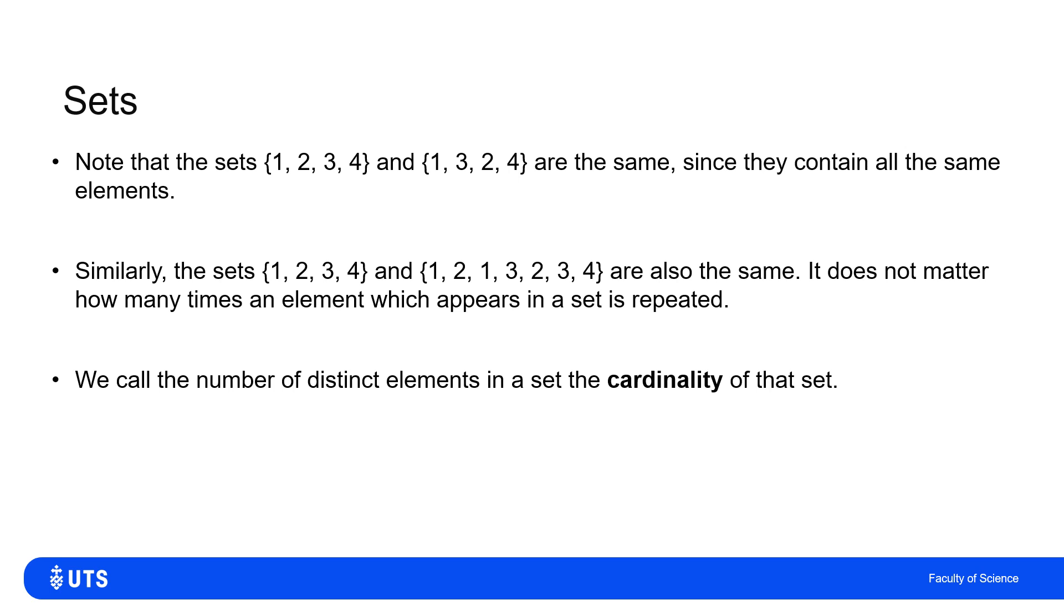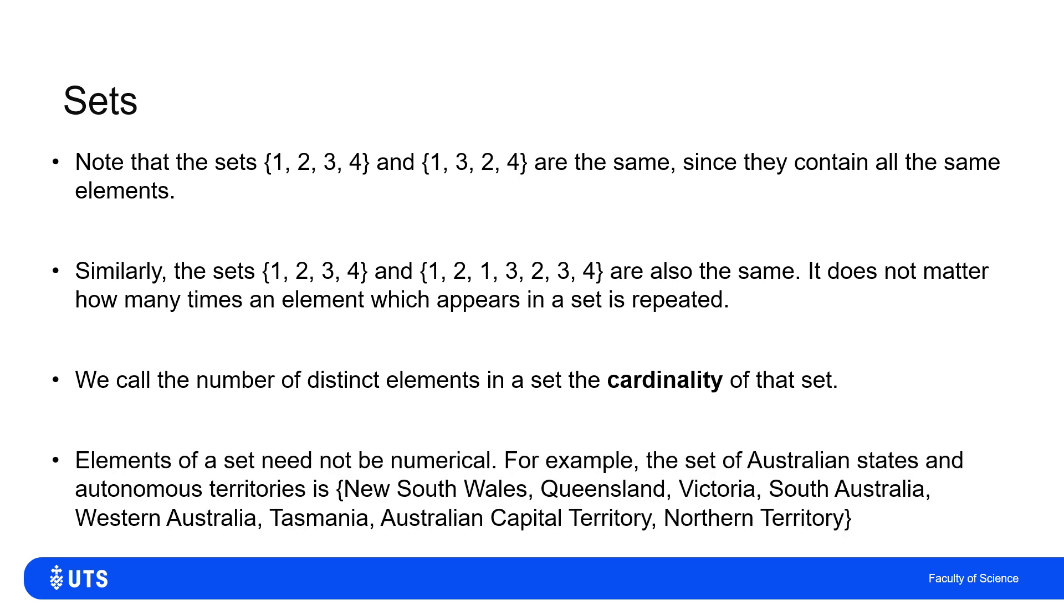And we call the size of a set, the number of distinct elements, so the number of different elements in the set, the cardinality of that set. Now, all of the examples that we've seen so far, the elements of a set have been numerical, but there's no reason why that needs to be. Here in Australia, we have six states and two autonomous territories, so I could write a set of those. The set would contain eight elements containing the names of these states and territories.